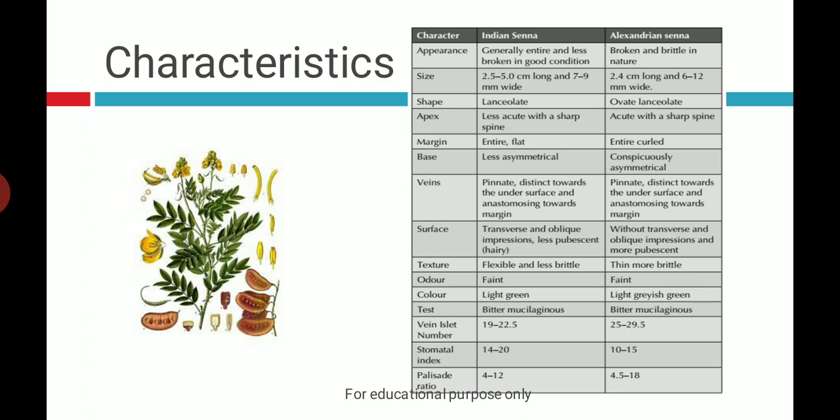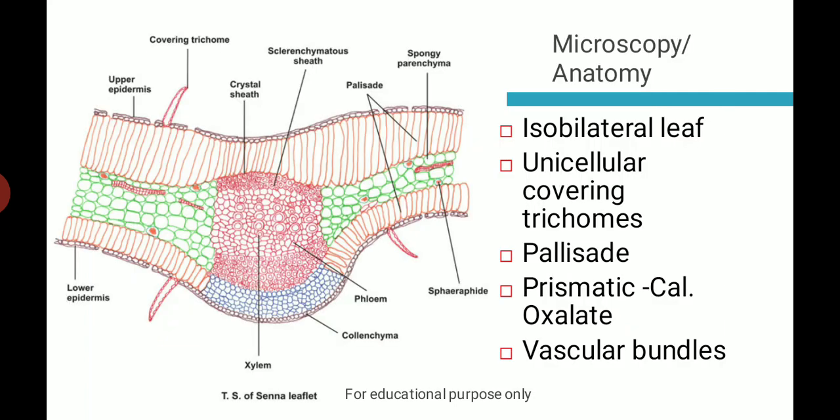The isolate number, stomatal index, and palisade ratio are commonly used to differentiate them. The isolate number is 19 to 22.5 for Indian variety and 25 to 29.5 for Alexandrian. Stomatal index is 14 to 20 for Indian variety and 10 to 15 for Alexandrian. Palisade ratio is 4 to 12 for Indian Senna and 4.5 to 18 for Alexandrian Senna. Find out what isolate number, stomatal index, and palisade ratio mean and write answers in the comment box.